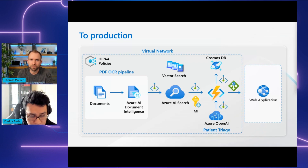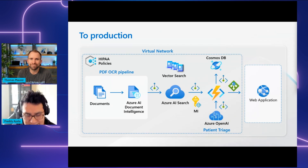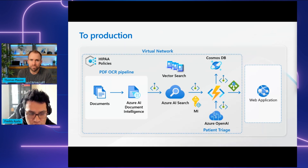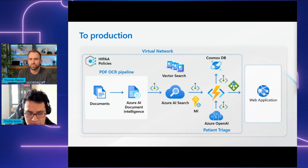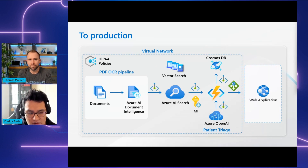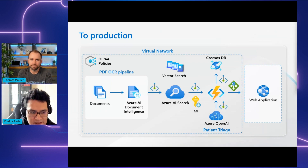They put network isolation measures in place using private endpoints to drastically cut down the risk of unauthorized entry into their systems. To reduce human errors in deployments, they used standardized deployment through infrastructure as code with Microsoft Azure Bicep — and in some cases other companies use Terraform. They combined data management, access control, secure networking, and automated deployment to create a resilient and secure platform for GenAI applications.